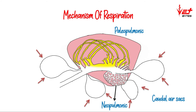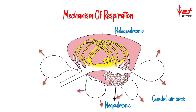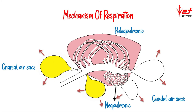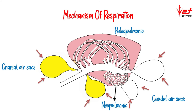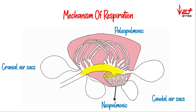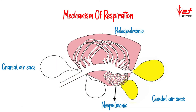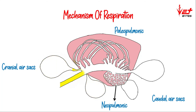During the second phase of inspiration, the air sacs expand again, so air in the paleopulmonic parabronchi goes into the cranial air sacs. During the second phase of expiration, the air sacs contract, so the air inside the cranial air sacs goes back into the atmosphere. So the air moves: atmosphere → caudal air sacs → paleopulmonic parabronchi → cranial air sacs → back into the atmosphere, and this cycle continues.